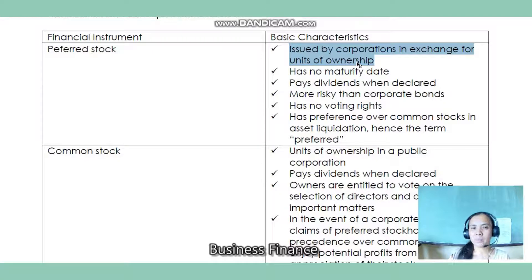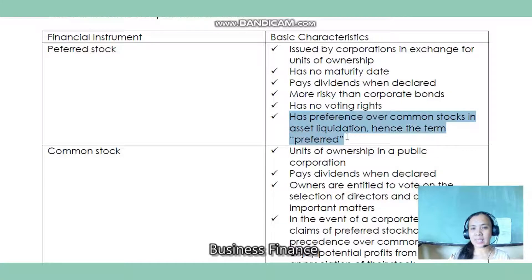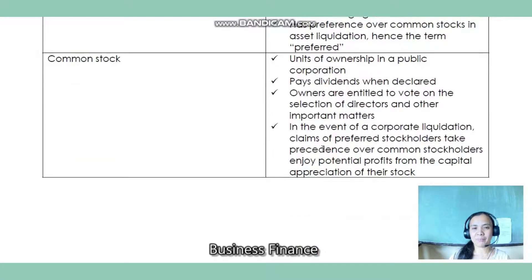What's the difference between preferred stock and common stock? Preferred stock is issued by corporations in exchange for an appearance of ownership — you become part owner of the company when you buy their stocks. It has no maturity date and pays dividends when declared. It is riskier than corporate bonds, but preferred stockholders have no voting rights. However, preferred stock has preference over common stocks in asset liquidation — during liquidation, preferred stockholders are paid first before common stockholders.